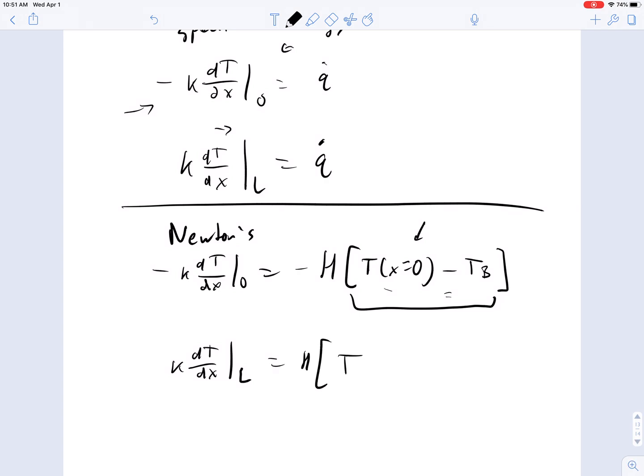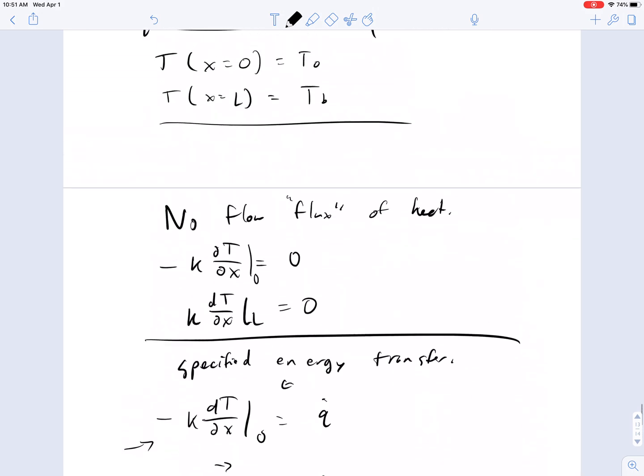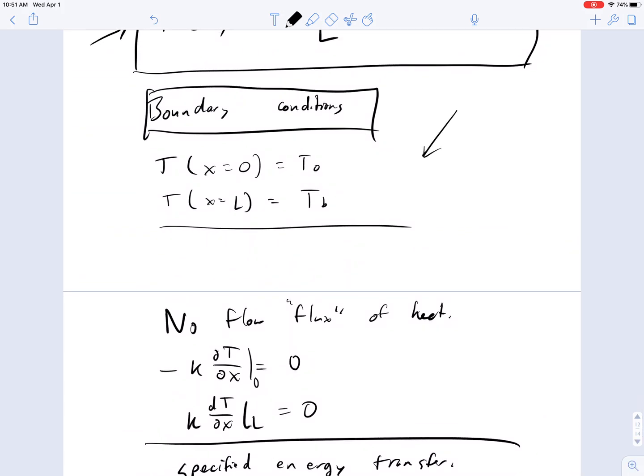Okay. Temperature at x equals L minus some other temperature on that boundary. So these are the four most common types of boundary conditions.